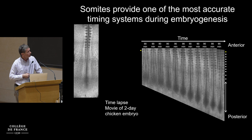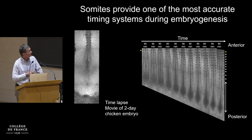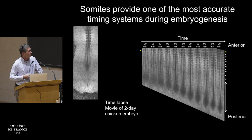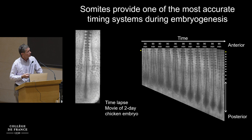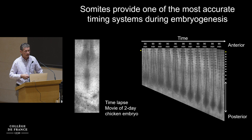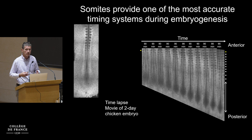The presomitic mesoderm exhibits the oscillations that we heard about, and it derives from early on the primitive streak and then the tailbud through the neuro-mesodermal precursors or NMPs. These somites, because of their regularity, have been used to stage embryos for a very long time. Here is a movie of the development of a chicken embryo. You can see the rhythmic addition of somites, which proceeds in a sequential fashion, such that an embryo that has more somites is obviously older than one that has less.